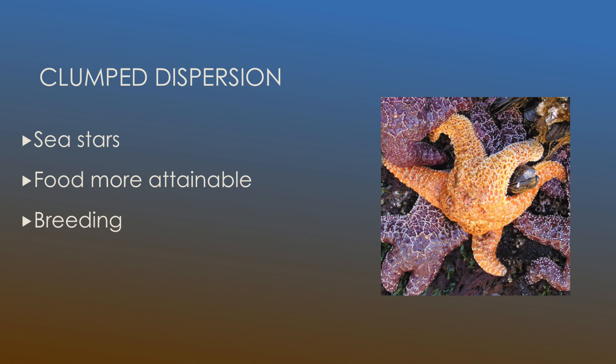Next we're going to look at some sea stars. Sea stars also undergo clump dispersion because it allows food to be more attainable and it allows for an increased rate of reproduction and breeding because they're clumped on top of each other.